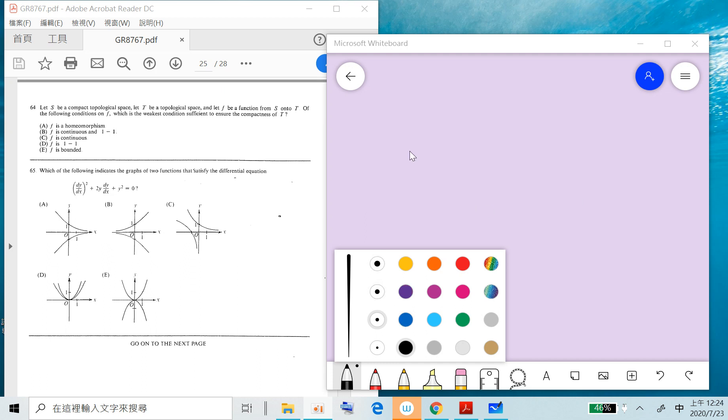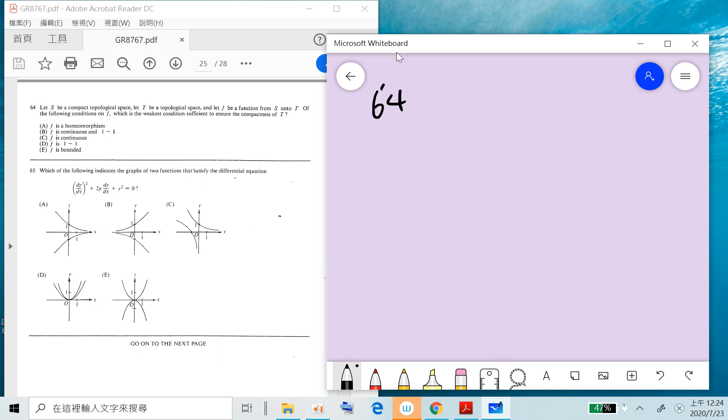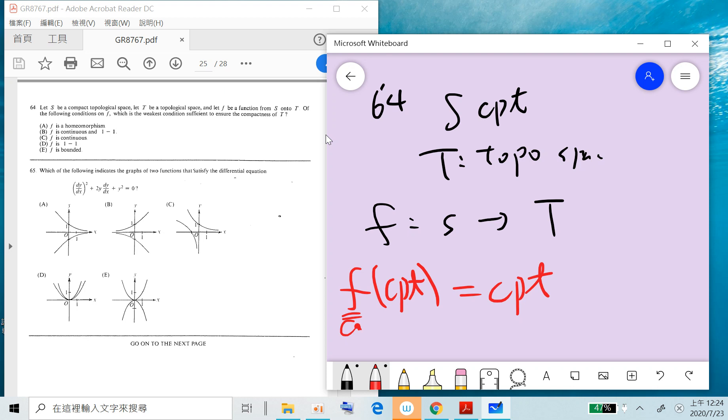Okay, so problem 64: S compact, T is topological space. When you write X to T, what are the weakest conditions needed to ensure compactness? Common sense: a compact set, the result is compact if f is continuous.